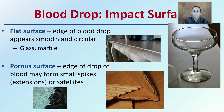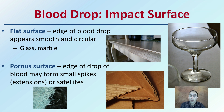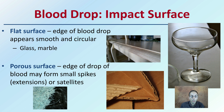Also, the surface that the blood impacts plays a great role in what is observed. On a flat surface like glass or marble, the edge of the blood drop appears smooth and circular. On a porous surface, such as cardboard, paper, or cloth, the edge may form small spikes or extensions and include more satellites due to the fibrous material.